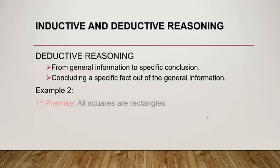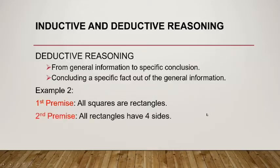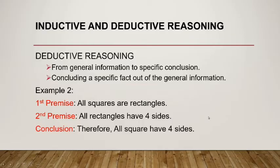Example number 2. Given the first premise, all squares are rectangles. Second premise, all rectangles have 4 sides. Conclusion, therefore all squares have 4 sides.